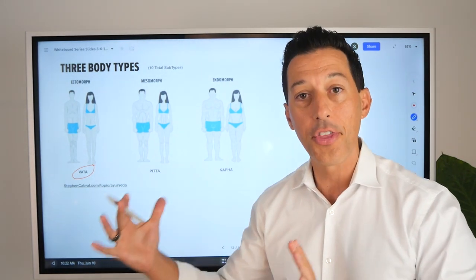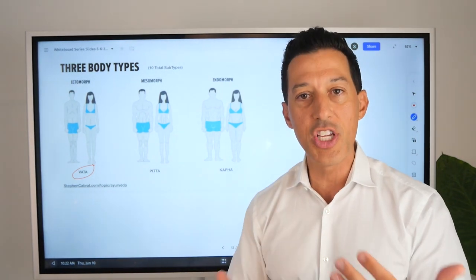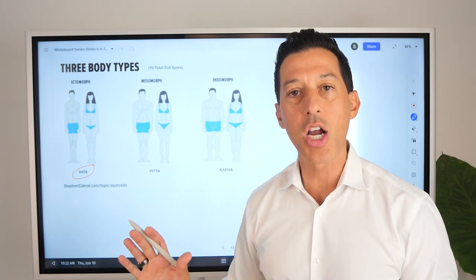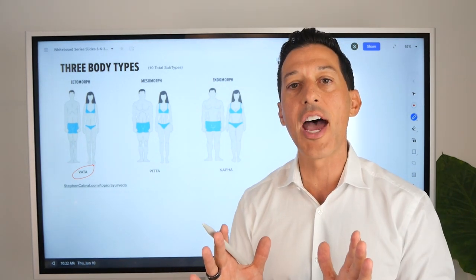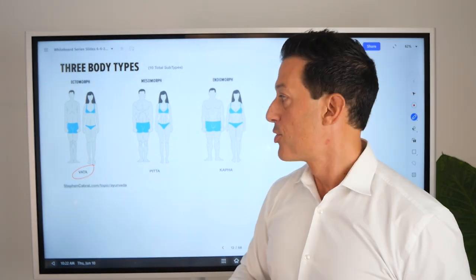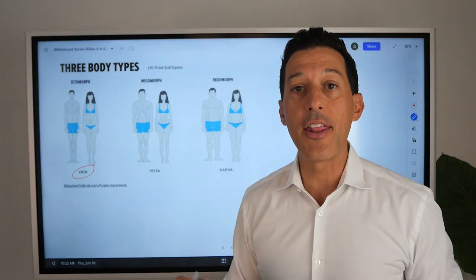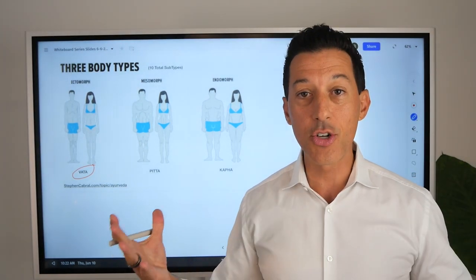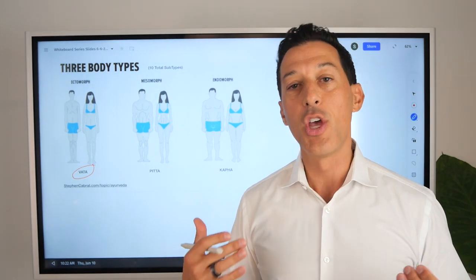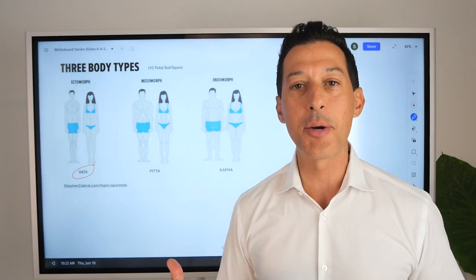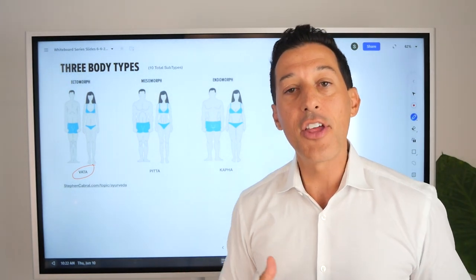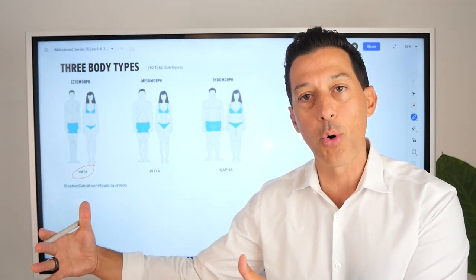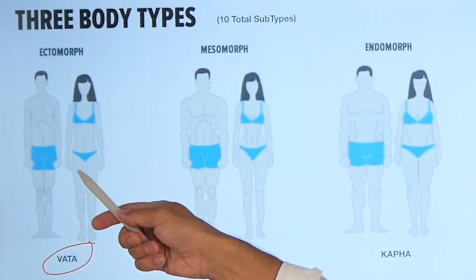I'm not going to go into the health issues or health benefits around each body type today, but I am going to talk about the actual structure of that body. There's no good, there's no bad — there just is. Once you know your body type, you actually know all the wonderful things that come along with it, and also the things you need to watch out for. That's really important as well. So that is the vata body type.